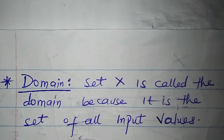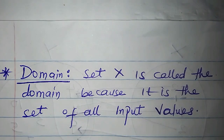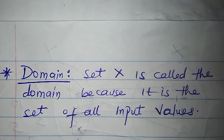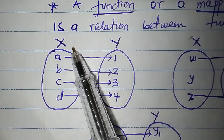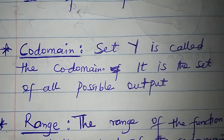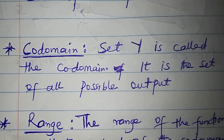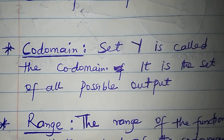Another term is domain. The domain of a function is set X, which contains the input values of the function. The values A, B, C, D in set X are mapped onto set Y — we call this set X the domain. Just as we have domain, we also have co-domain. We call Y the co-domain because it is the set of all possible outputs.